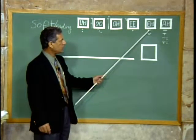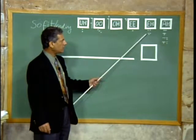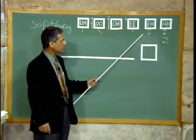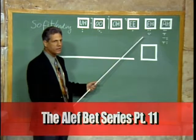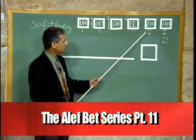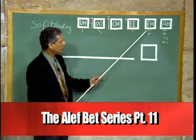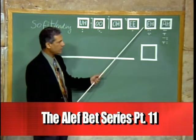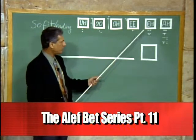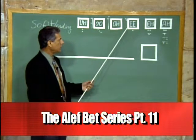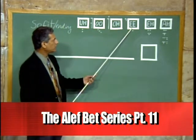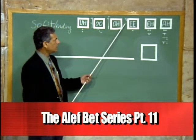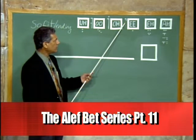Then we have another A sound. Here is two dots under the letters — horizontal dots — or the three hanging grapes. You produce an A sound. Here is a letter, and next to the letter,